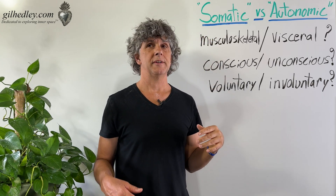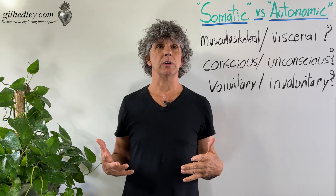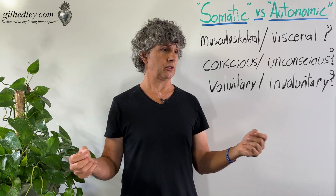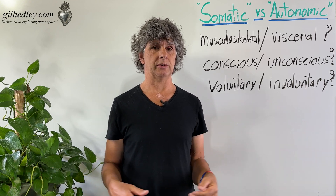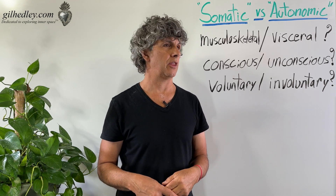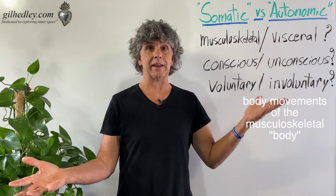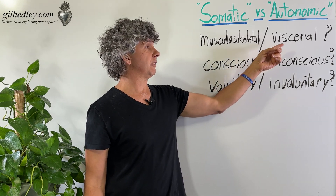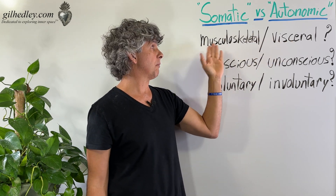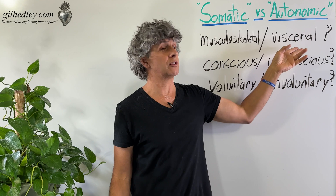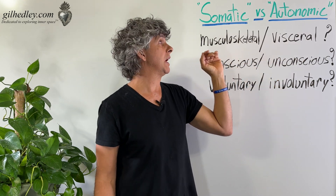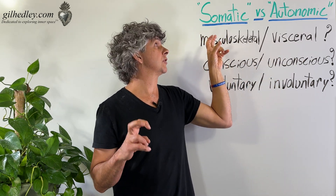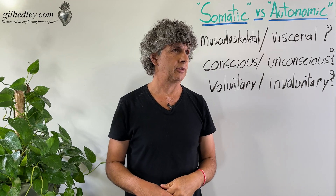The somatic nervous system would be meant to include the sort of musculoskeletal responsiveness — the body movements at large — as opposed to the visceral movements. So musculoskeletal movements versus visceral movements might be one way to describe the difference between the somatic and the autonomic nervous system.